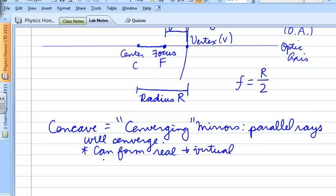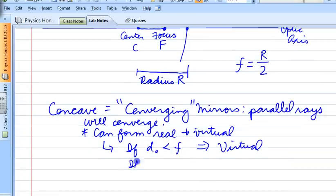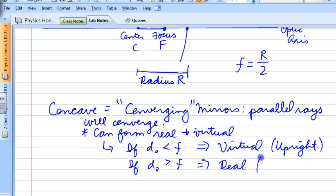And the type of image depends on where you're at. So basically, it works kind of like this. If the object distance is less than the focal point, then you're going to have a virtual image. However, if it's greater than the focal point, you're going to have a real image. And of course, virtual is going to be upright, and real is going to be inverted.